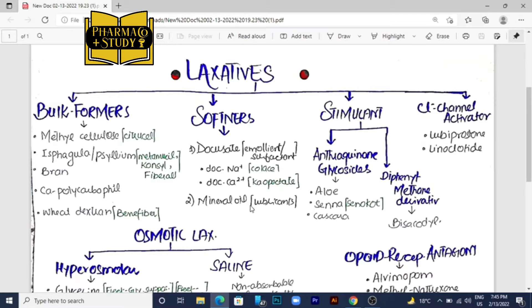Now comes the stimulant laxatives. There are two classes. One is anthraquinone glycoside. In this class there are three drugs: aloe vera, SANA which comes under the name sanocot, and the third one is cascara. These are herbal drugs.